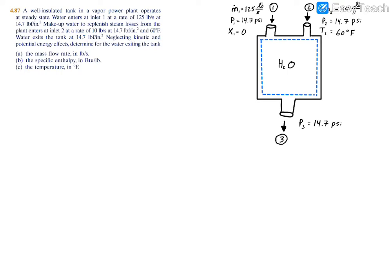This example exercises control volume analysis. I drew a schematic of what's going on. You have a well-insulated tank with two inlets. One inlet has a mass flow rate, a pressure, and a state - it's just water, so X1 equals zero.